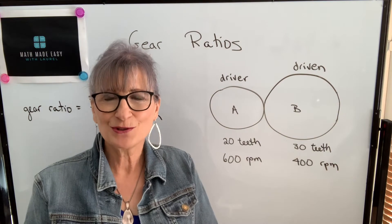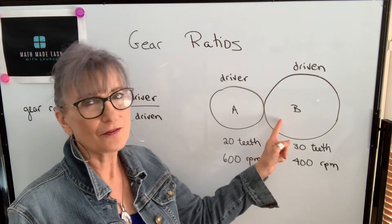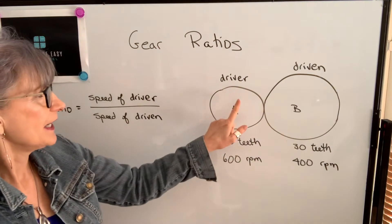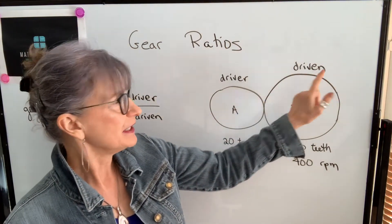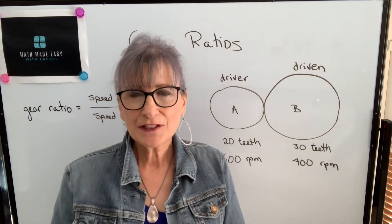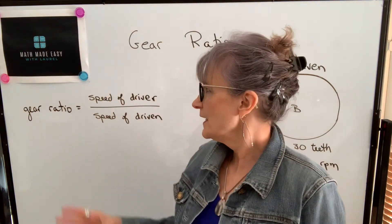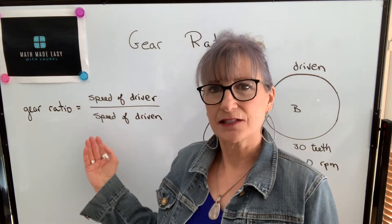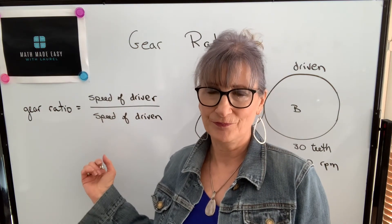What I want to do in this video is talk about what the gear ratio is of this gear train if A is the driver and B is the driven gear. The definition for a gear ratio is a comparison of speeds, and it's the speed of the driver compared to the speed of the driven.